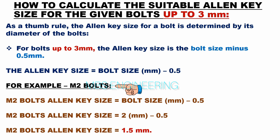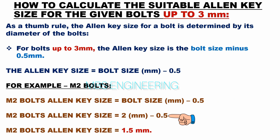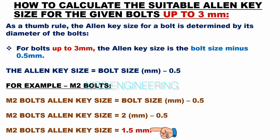Sample calculation for M2 bolts: allen key size = bolt size (mm) − 0.5 mm = 2 mm − 0.5 mm = 1.5 mm. Therefore, M2 bolts require a 1.5 mm allen key.